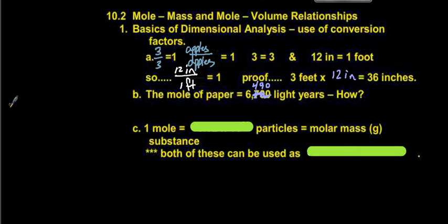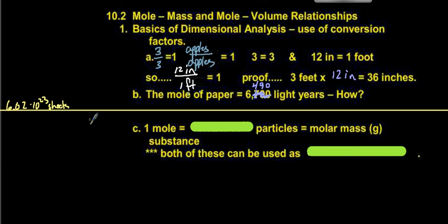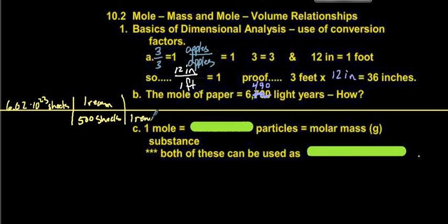We'll start with 1 mole of paper, which is 6.02 × 10²³ sheets of paper. We multiply this by the conversion where 500 sheets equals 1 ream. And we measured in class that 1 ream equals 2 inches — that 1 ream of paper is 2 inches tall.